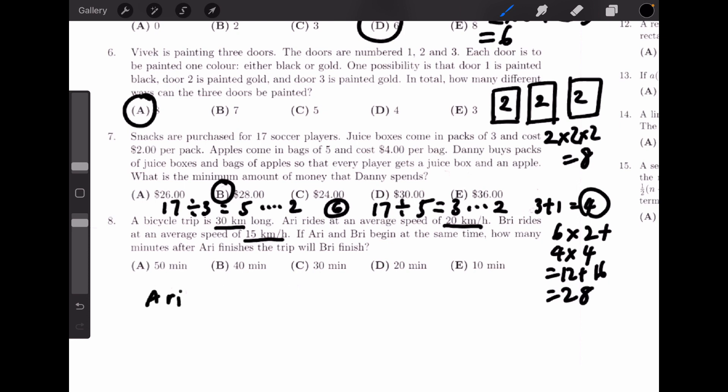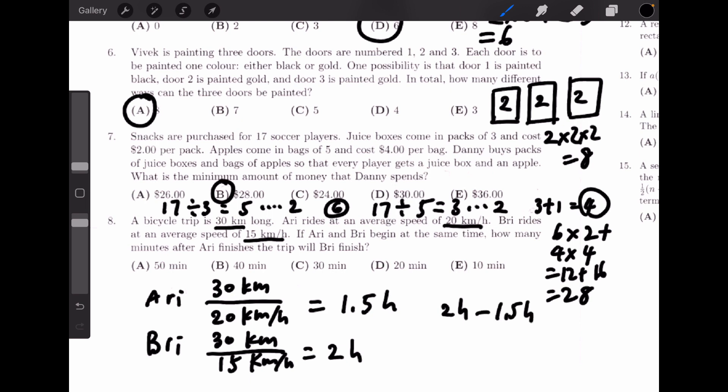For Ari, it would be 30 kilometers divided by 20 kilometers per hour, which gives us 1.5 hours. For Brie, it should be 30 kilometers divided by 15 kilometers per hour, which gives us 2 hours. 2 hours minus 1.5 hours equals 0.5 hours, which equals 30 minutes. So the answer would be C.